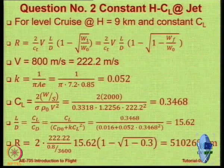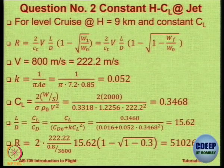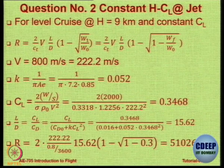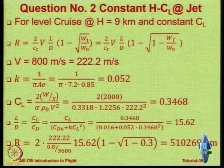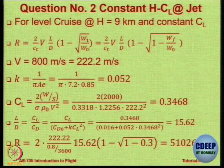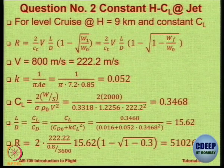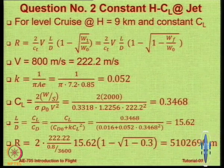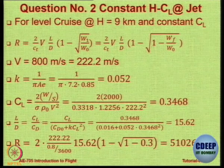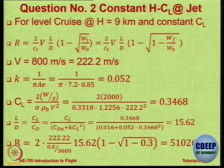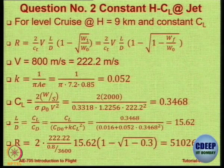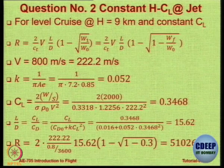Now calculate the endurance. What is the formula for endurance for a jet engine aircraft? For any condition, it is E = (1/C) × (L/D) × ln(W0/W1). C is the same 0.8 per hour, converted to per second as 0.8/3600. L/D is the same 15.62. The weight ratio becomes ln(1 / (1 − 0.3)), since the fuel weight fraction is 0.3.